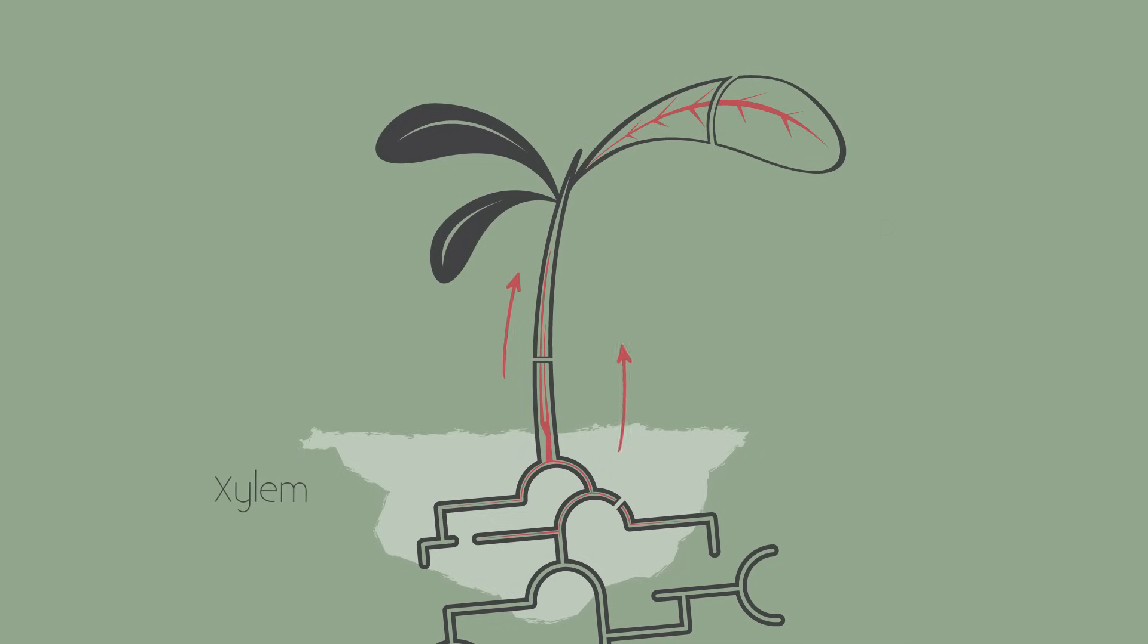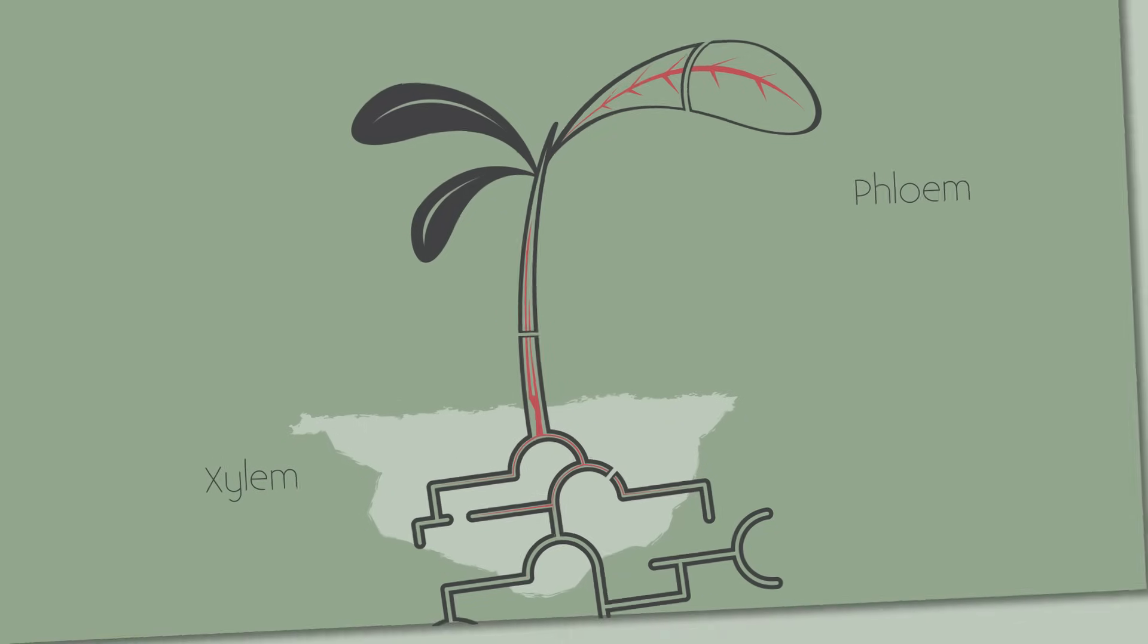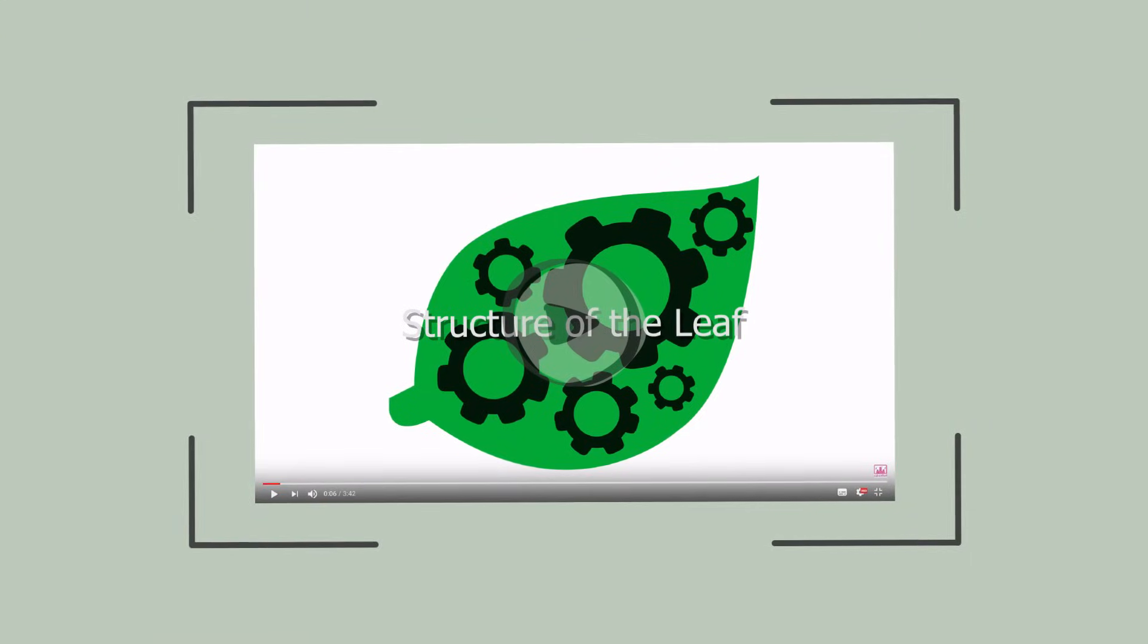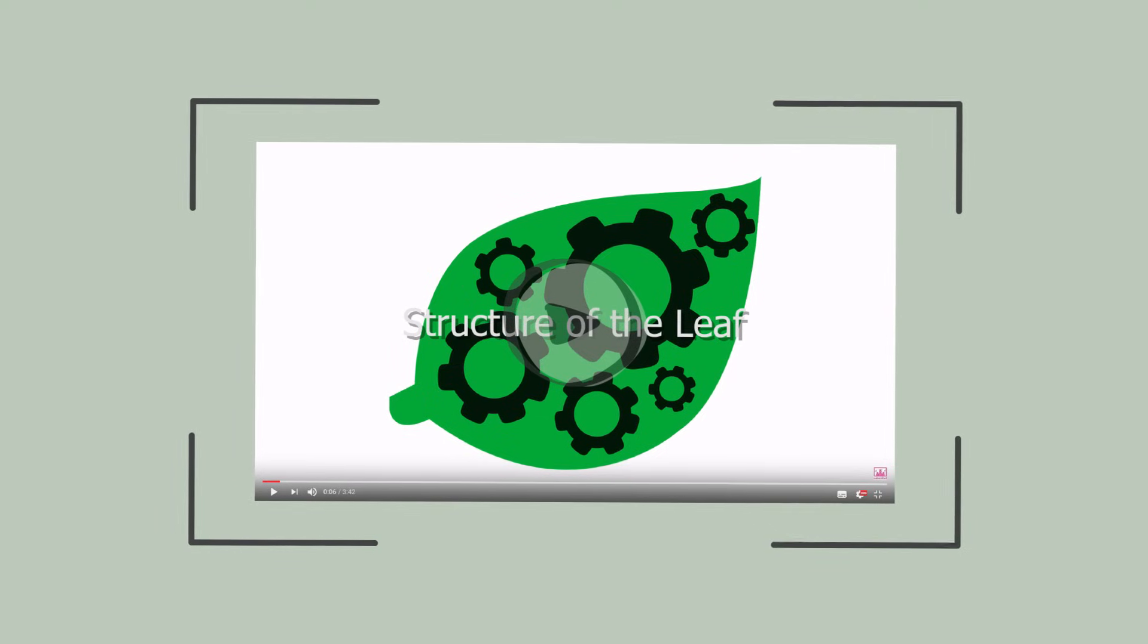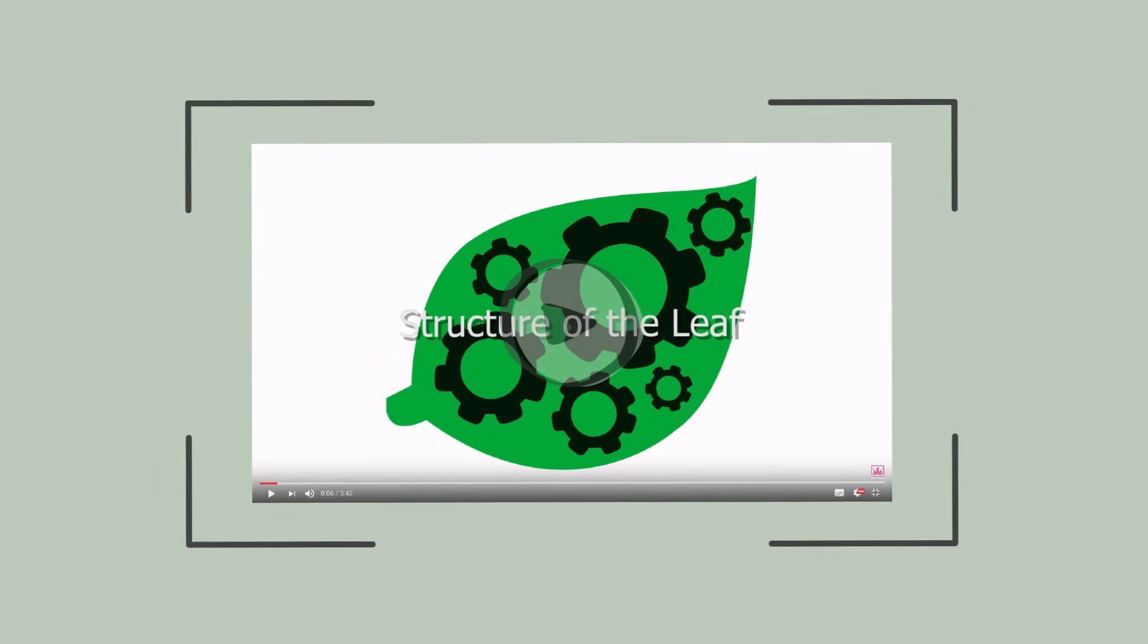So we know all about the xylem and the phloem, but now we need to know exactly how water and minerals move around the plant. You should already know about the structure of the leaf, but if not, watch this video to remind you.